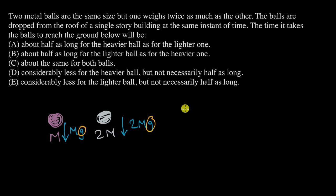Both the balls are accelerating by the same rate, that is 9.8 meters per second squared, and they're starting from the same speed. They are both being dropped so initial velocity is zero and they're accelerated by the same rate. The first option says about half as long for the heavier ball as for the lighter one, which basically means that the heavier ball reaches the ground first. If the lighter ball takes five seconds, the heavier ball would take 2.5 seconds.